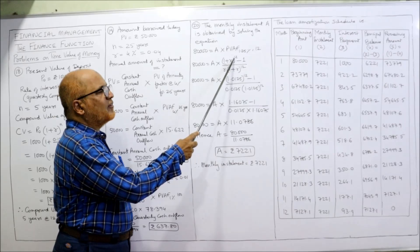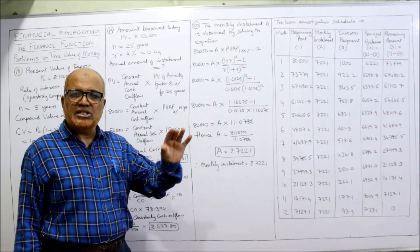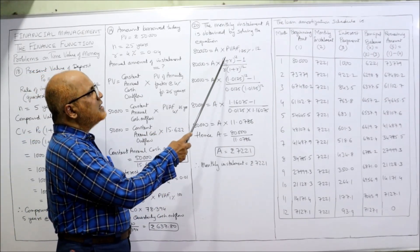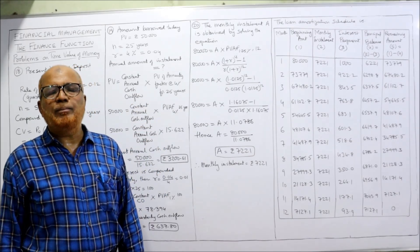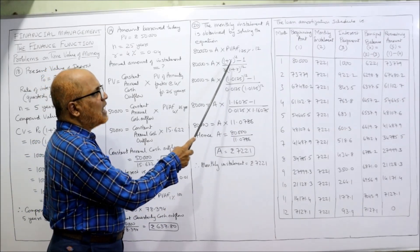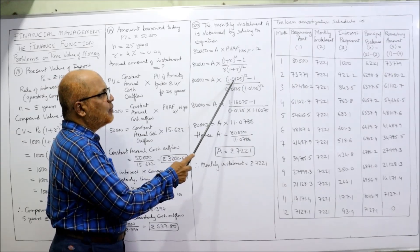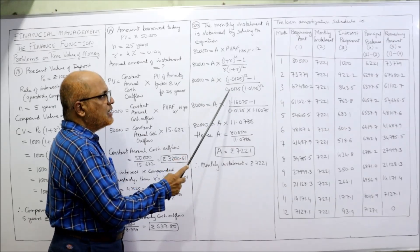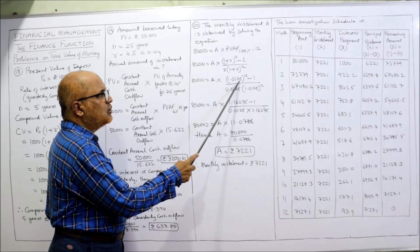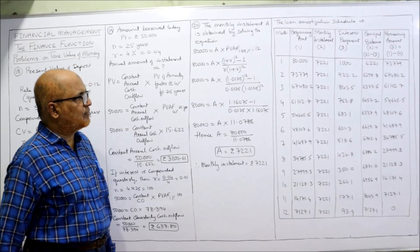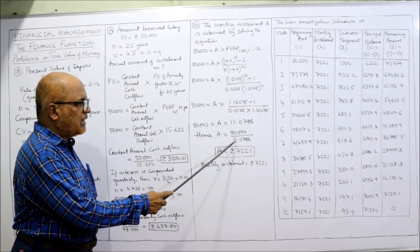The PV annuity factor formula is: [(1 + R)^n − 1] ÷ [R × (1 + R)^n]. Here R = 1.25% = 0.0125 and n = 12. Substituting: (1.0125)^12 = 1.16075. So numerator = 1.16075 − 1 = 0.16075, and denominator = 0.0125 × 1.16075 = 0.014509. This gives PV annuity factor = 11.0786.